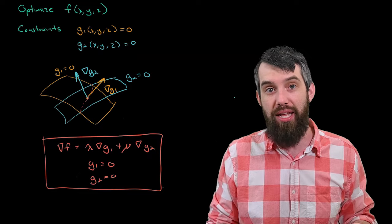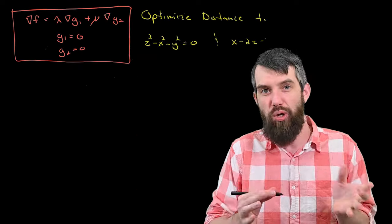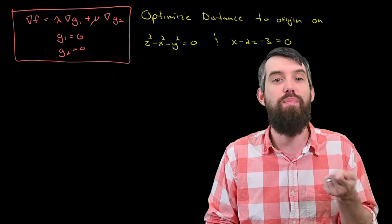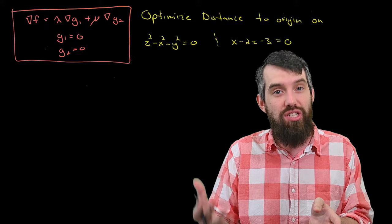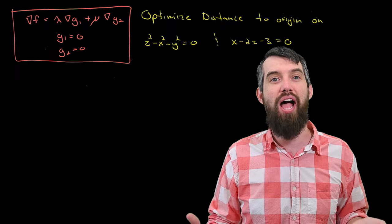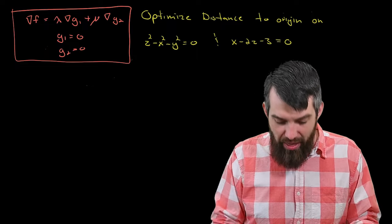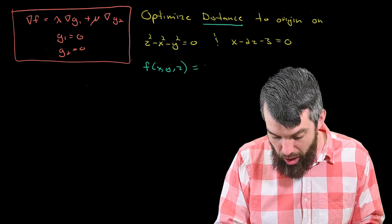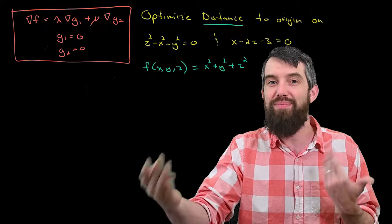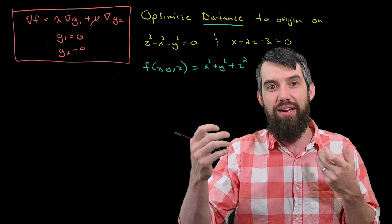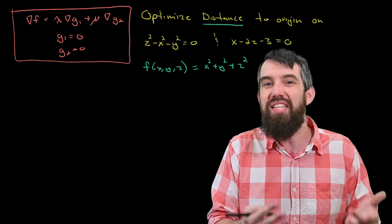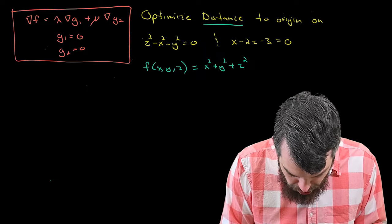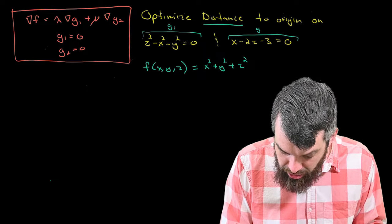Let's see how we can use this in a specific example. I want to optimize the distance from the origin to points on the intersection of two constraints: z squared minus x squared minus y squared equals zero, and x minus 2z minus 3 equals zero. The function to optimize is implicit in the distance formula. I'm going to say f of x, y, z is x squared plus y squared plus z squared, which represents the distance squared, and that is the thing I'm going to optimize.